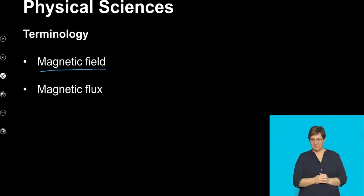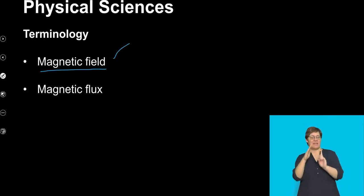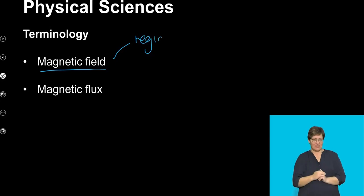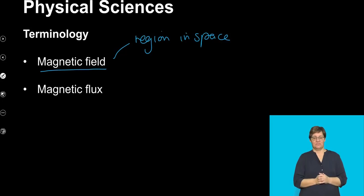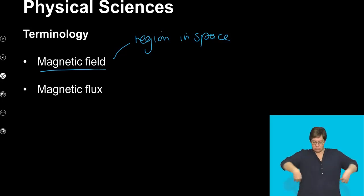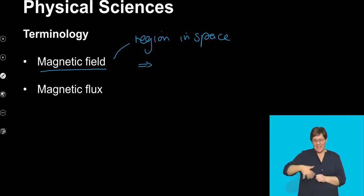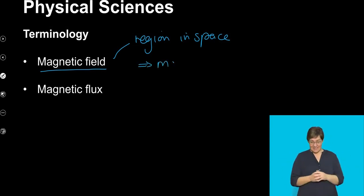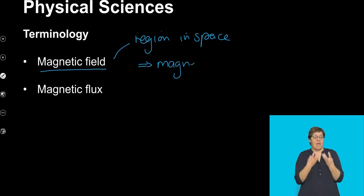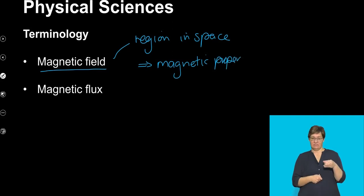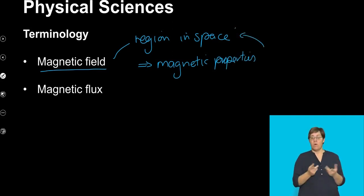I want to remind you about this idea of a magnetic field. A magnetic field is just a region in space — like a gravitational field or an electrostatic field. When we have objects with magnetic properties, and there are not many of them, when they're placed into this region of space, they will experience a force.